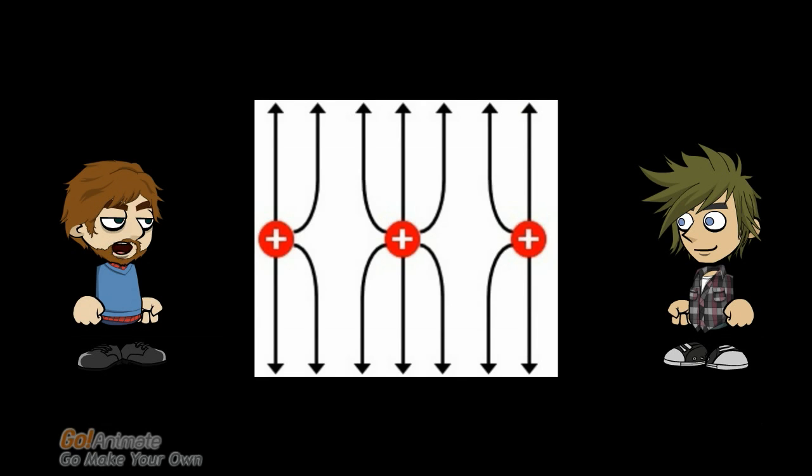Suppose we zoom in on three positive charges in the middle of the long line of positive charges on the top plate. We know that the electric field will go away from each charge and we know the lines will appear to repel each other. Once we get a little bit away from the charges the lines look like they are parallel.